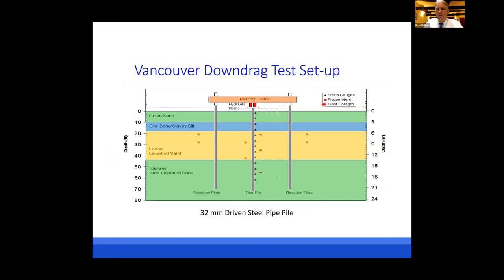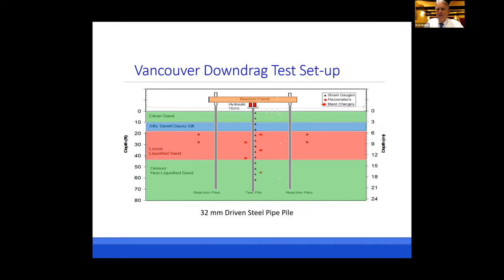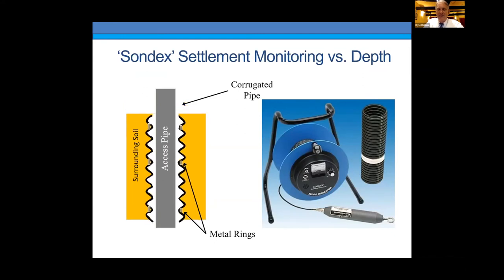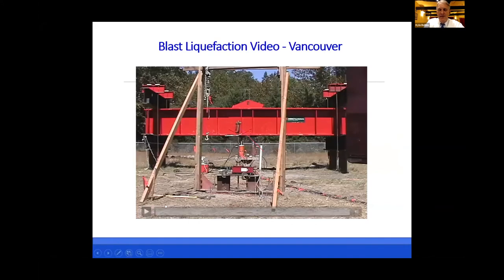Our setup included a test pile with four reaction piles. We set off explosive charges, measured excess pore pressures with pore pressure transducers, and measured strain in the pile with triangular strain gauges. We applied a load equal to one half of the ultimate pile capacity prior to the blast test. To monitor soil settlement, we used the Sondex settlement pipe — a corrugated pipe with metallic rings that settles with the ground, giving a profile of settlement versus depth.